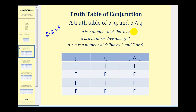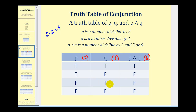An example: if P is 'the number is divisible by two' and Q is 'the number is divisible by three,' then P AND Q means the number is divisible by both two and three, or by six. A number is divisible by six only when it's divisible by both two and three. If it's divisible by two but not three, or three but not two, or neither, it's not divisible by six.